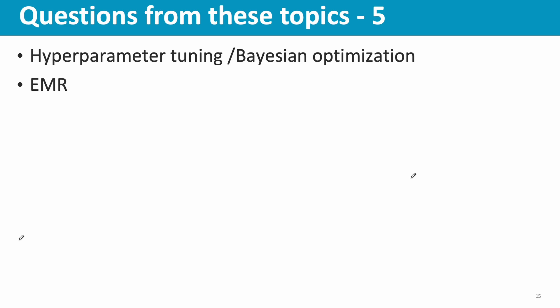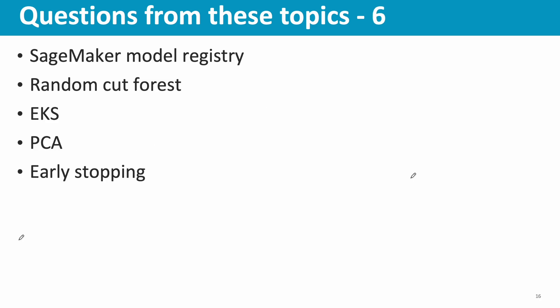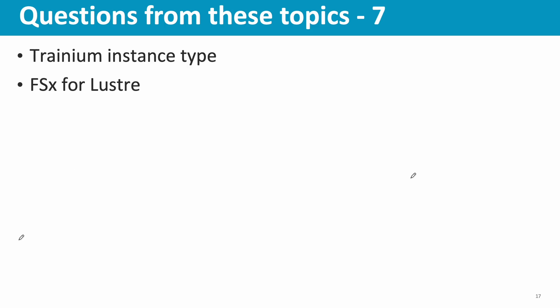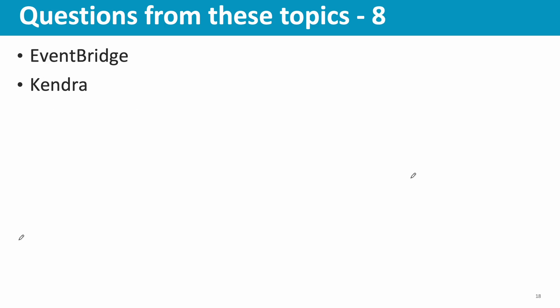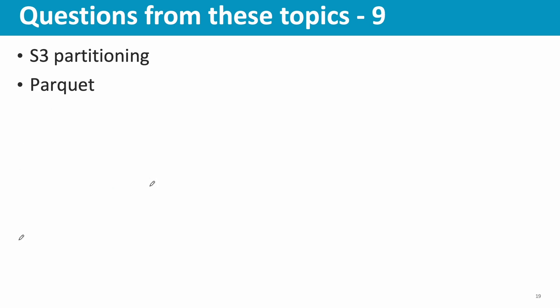Hyperparameter tuning and Bayesian optimization — one question. EMR node types (core node, task node, master node) and Spot Instances — one question. Reserved instances for SageMaker — one question. XGBoost and avoiding overfitting (e.g., adjusting max depth) — one question. CloudFormation resource types for creating a SageMaker model — one question. Model Registry — one question. Random Cut Forest — one question. EKS — one question. PCA (Principal Component Analysis) — one question. Early stopping — covered. Trainium instance type — one question. FSx for Lustre — one question. SageMaker Experiments — covered. RAG (Retrieval-Augmented Generation) — covered. EventBridge and Kendra — covered. Entity recognition and Comprehend — one question. Learning rate — one question.